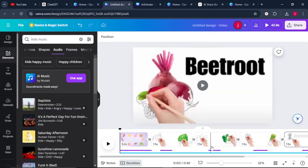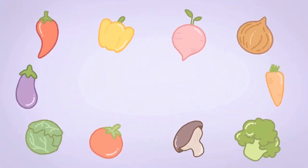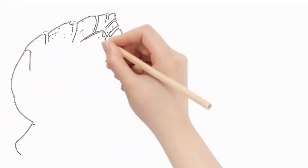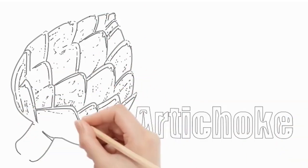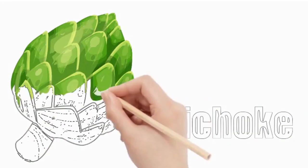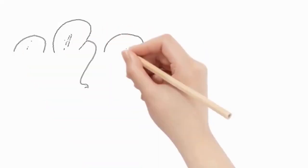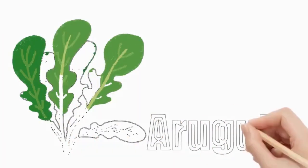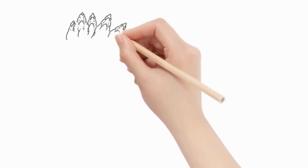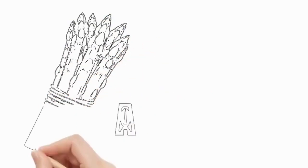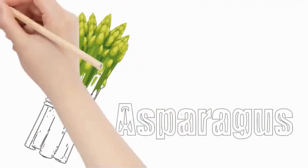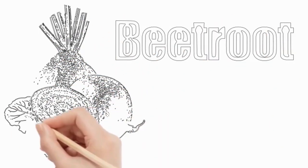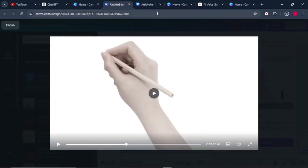Enlarging the screen to show the final product: 'Hello, little nutritionists. Today, we will learn about different types of vegetables. Number one, artichoke. Number two, arugula. Number three, asparagus. Number four, beetroot.' Okay, let's stop there.